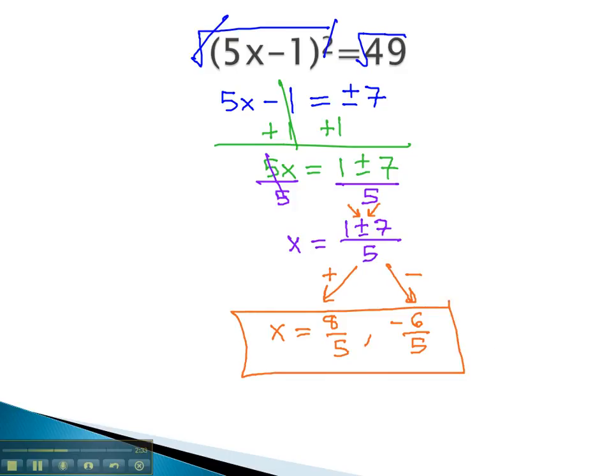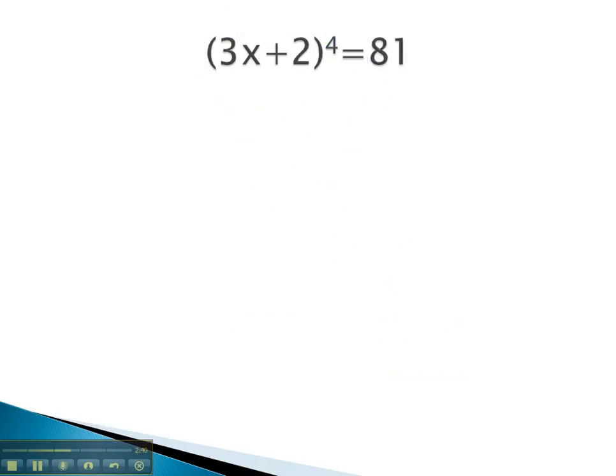Let's take a look at another example where we solve by clearing an even exponent and end up with two solutions. In this problem, we have a fourth power, which we get rid of with a fourth root.